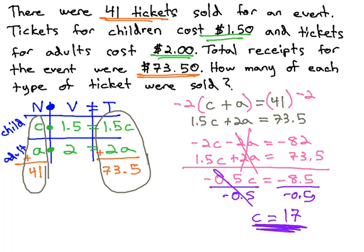Once we know the number of children, we can quickly find the number of adults by plugging that value into one of the original equations. I'm going to pick the first equation because it's probably the easiest, C plus A. We just found out C was 17, plus A equals 41.